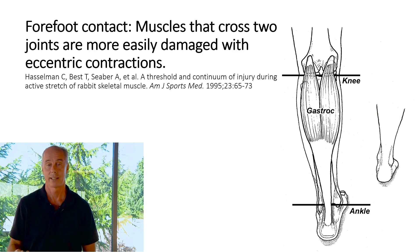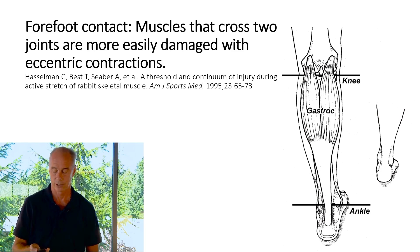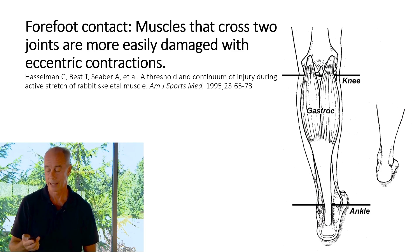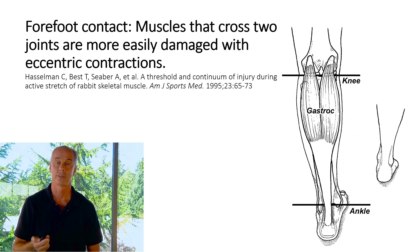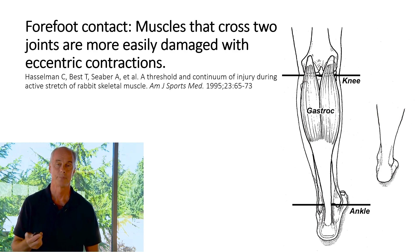If you've got a thick Achilles tendon and a strong gastrocnemius, a forefoot strike is an option. But keep in mind gastrocnemius is an unusual, relatively weak muscle.